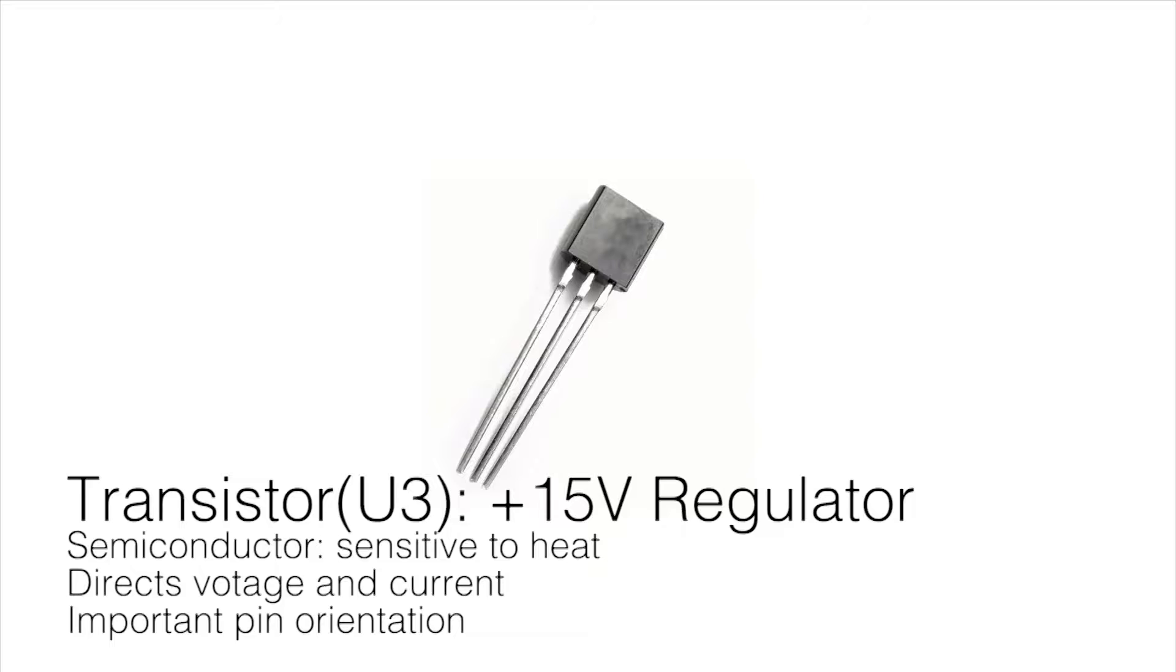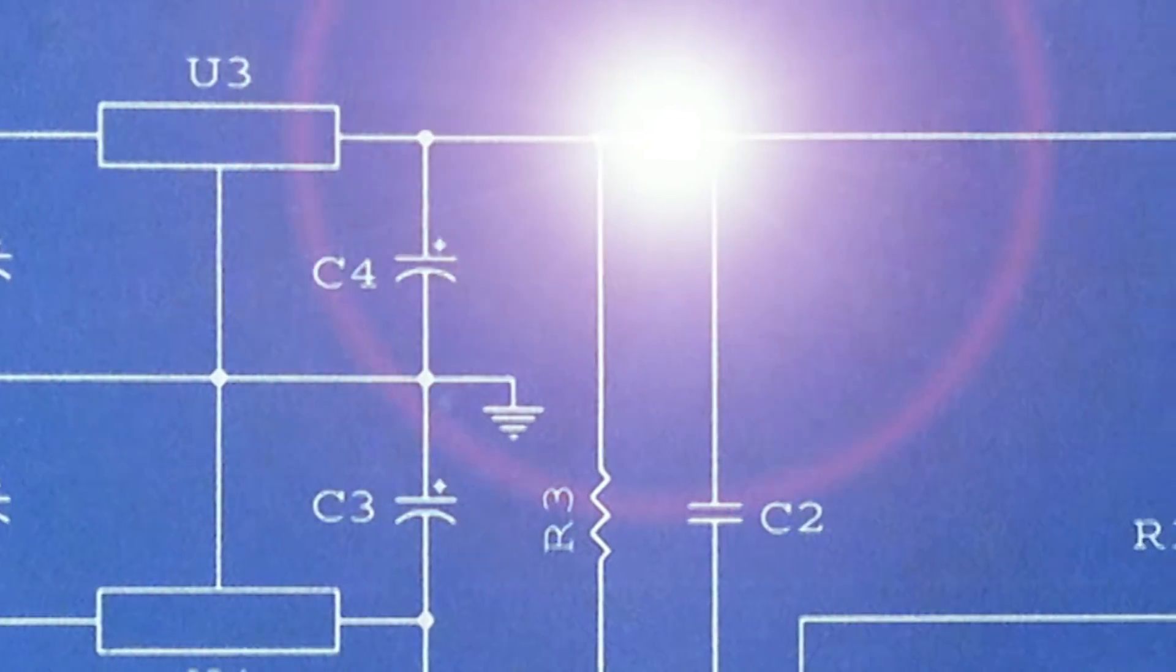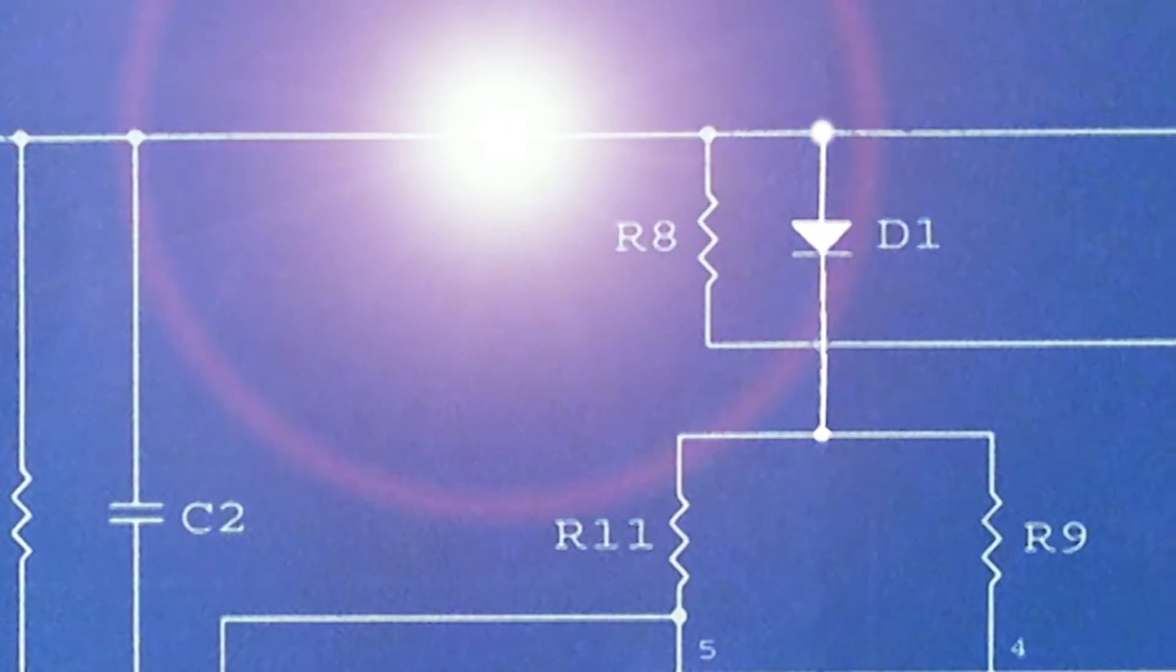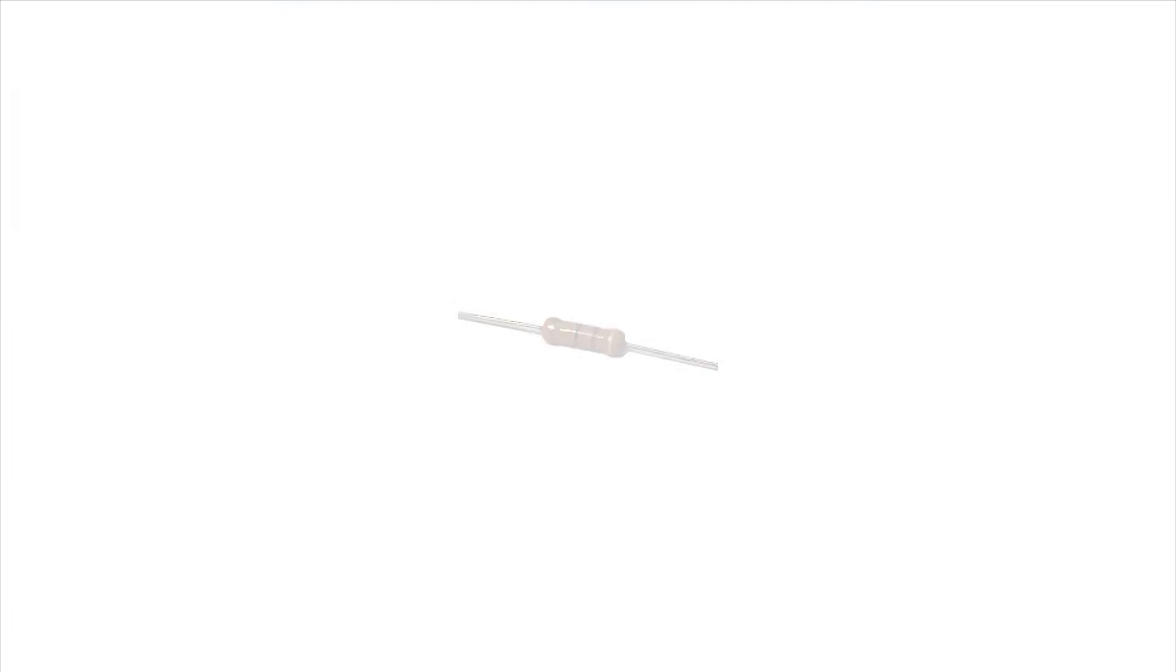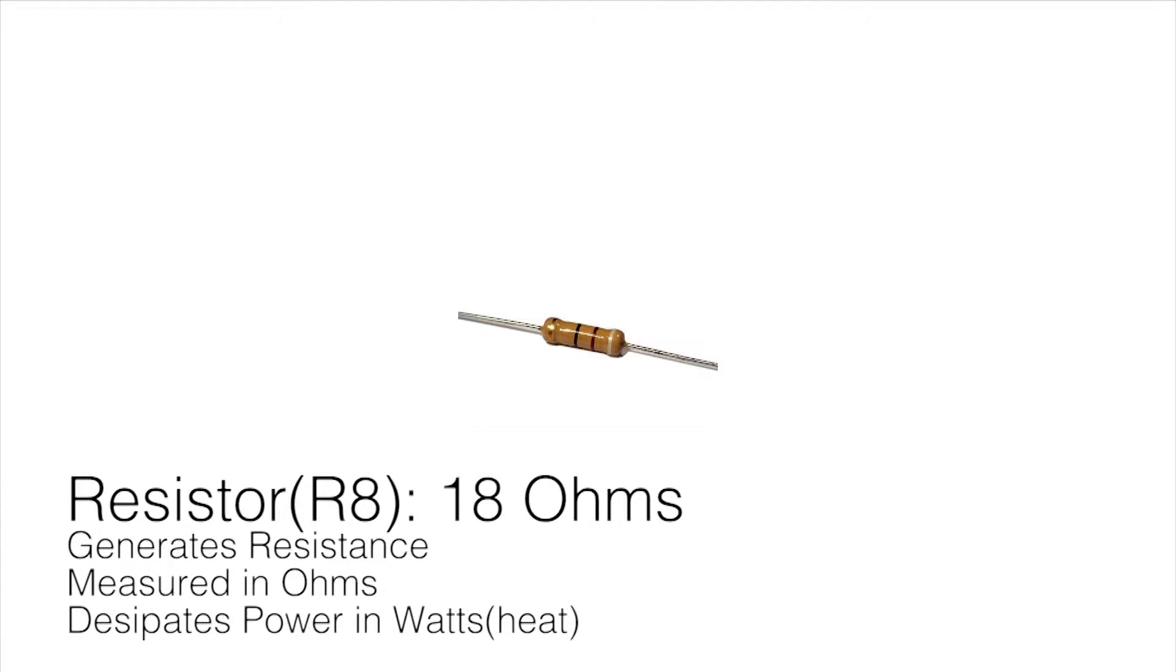Our newly modified signal now goes down our path and encounters our first resistor. As our resistor changes the properties of our signal, you can hear some of the energy being dissipated in the form of heat.